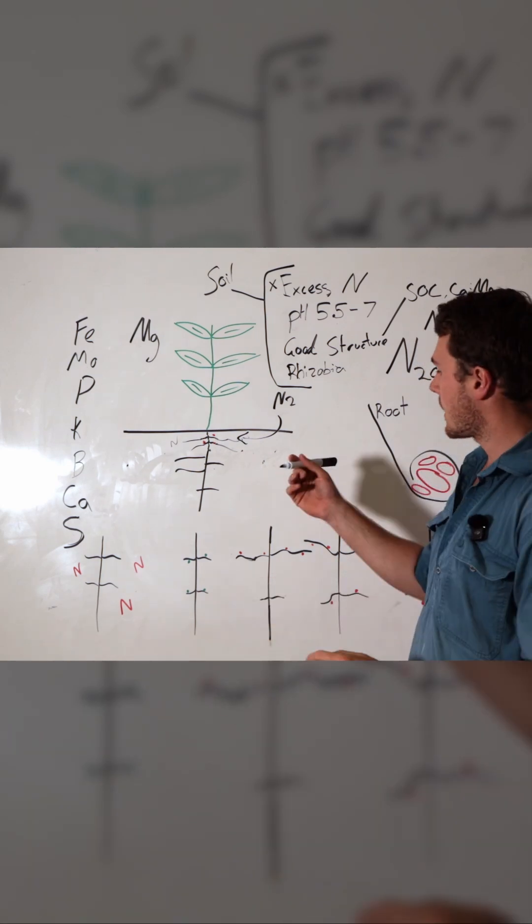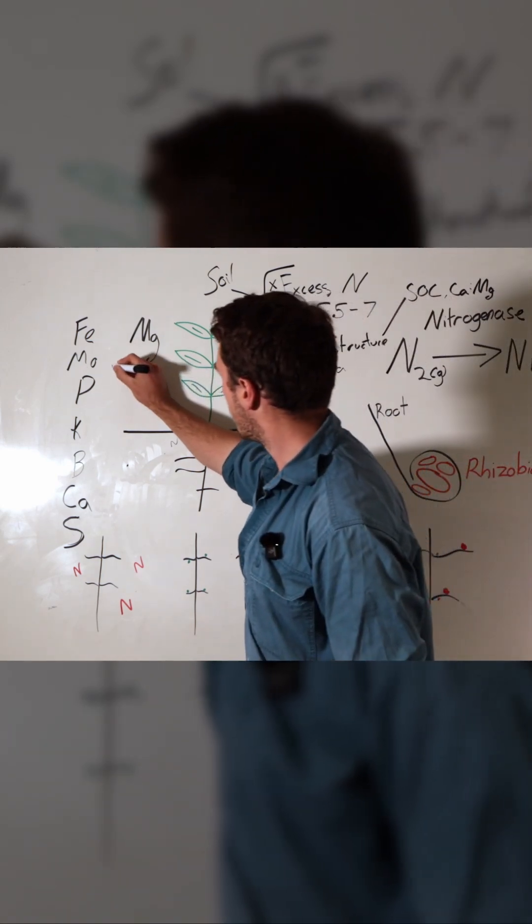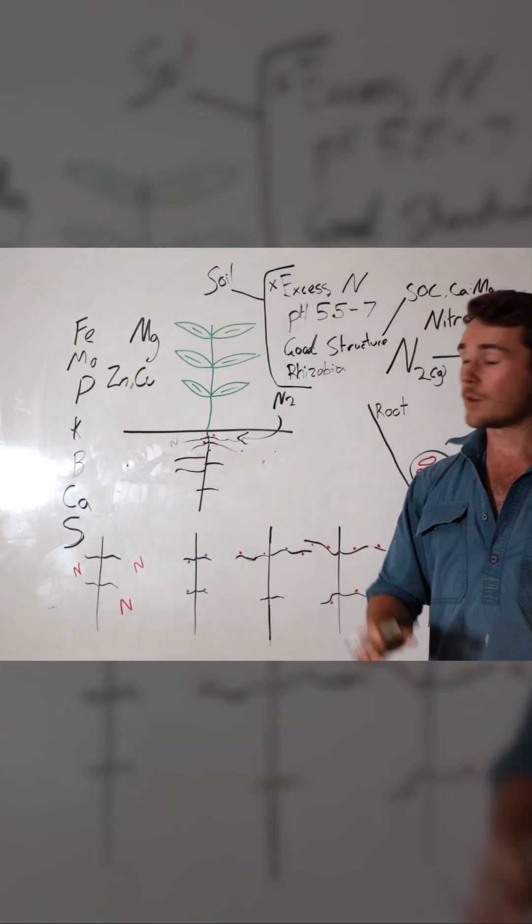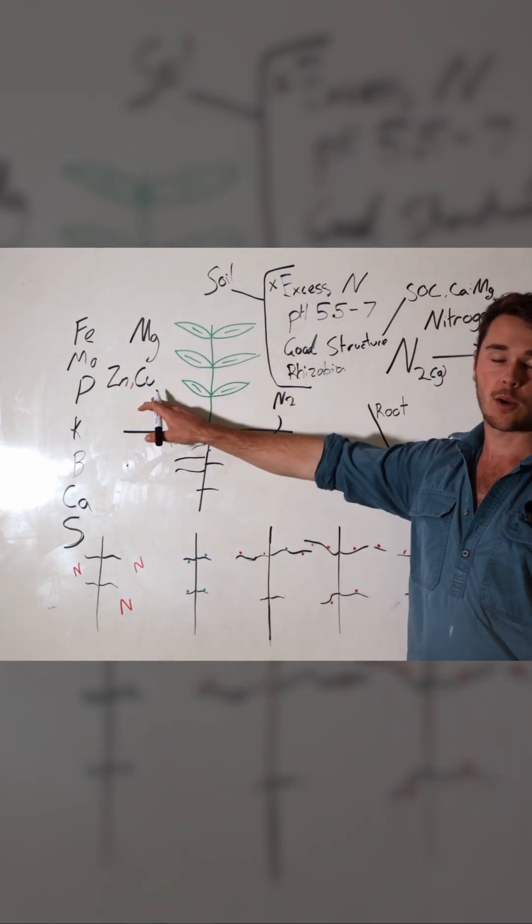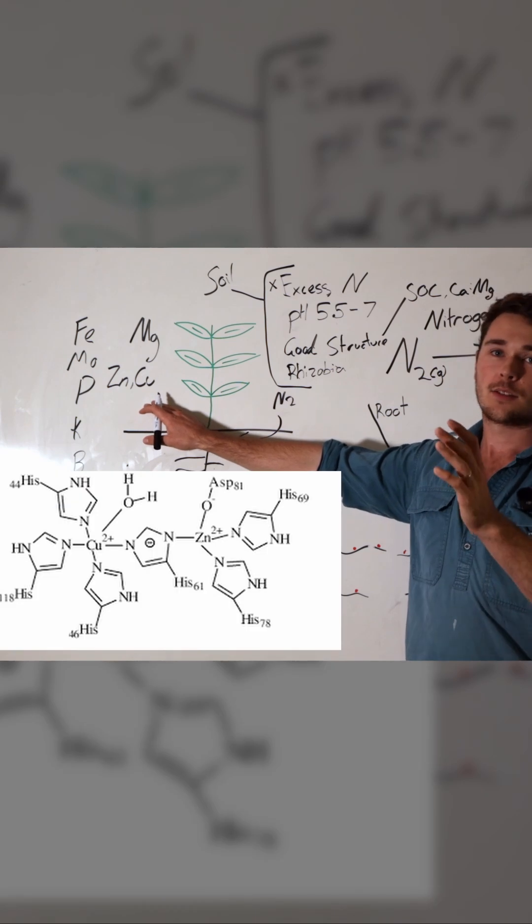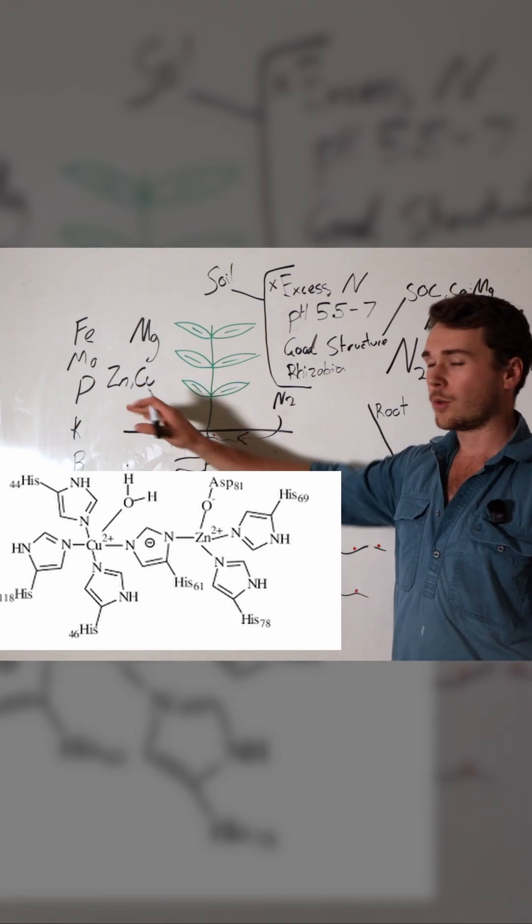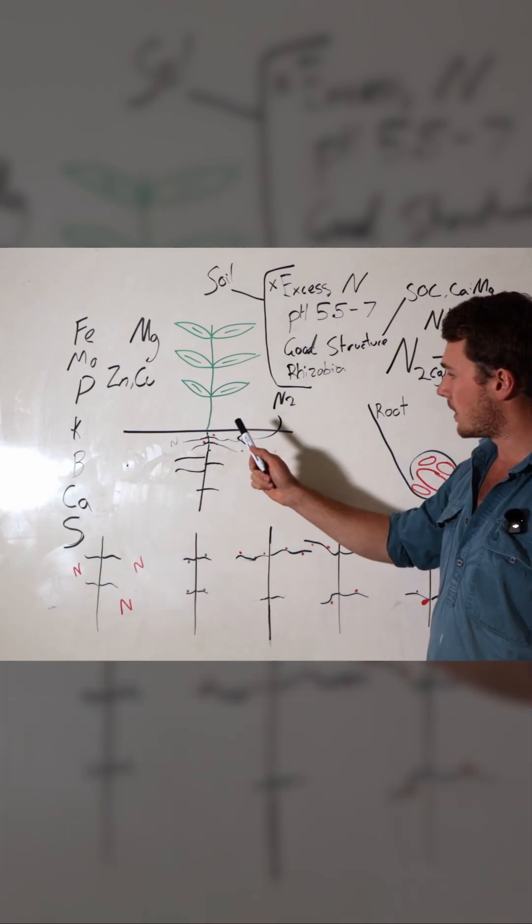The next minerals are a combined effort: zinc and copper. These two minerals are required in what's called copper-zinc superoxide dismutase, which helps reduce free radicals in the nodules.